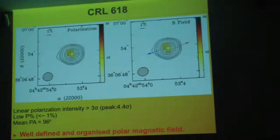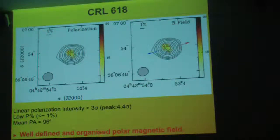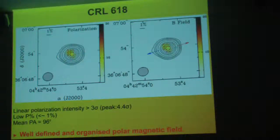This magnetic field is aligned with the outflow. The blue and red arrows show you the CO outflow — the ¹²CO J=2-1 transition. In the case of CRL 618, what you can see is that you have a well-defined and well-organized polar magnetic field.